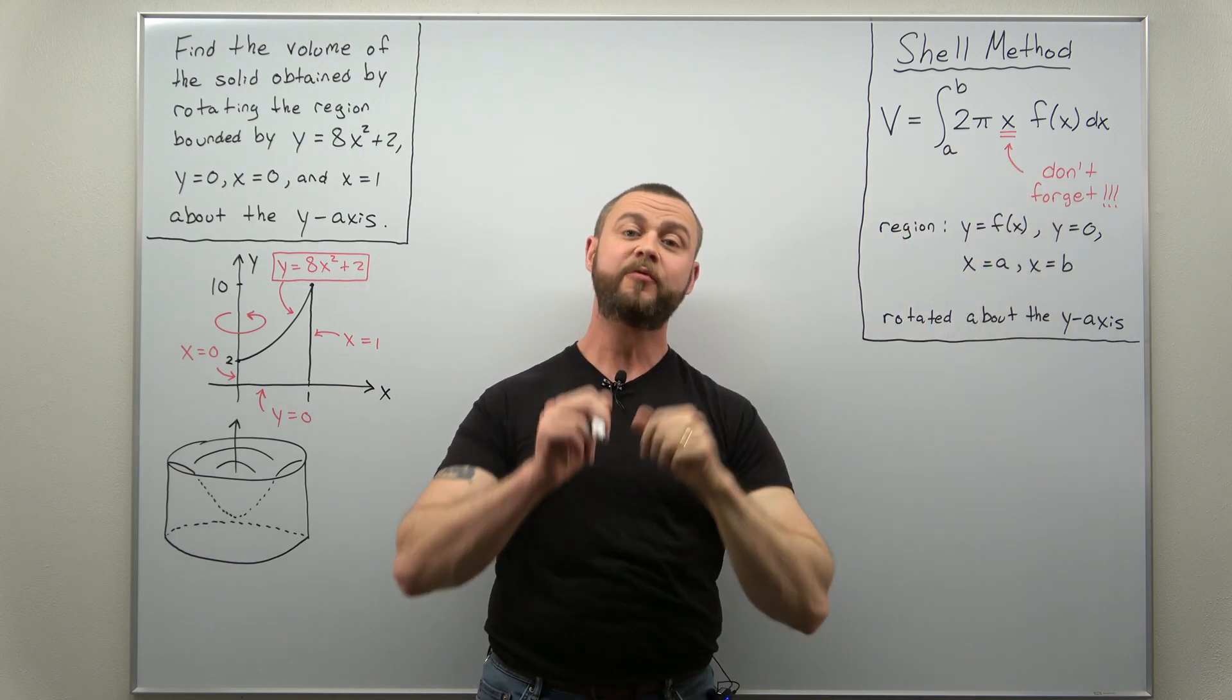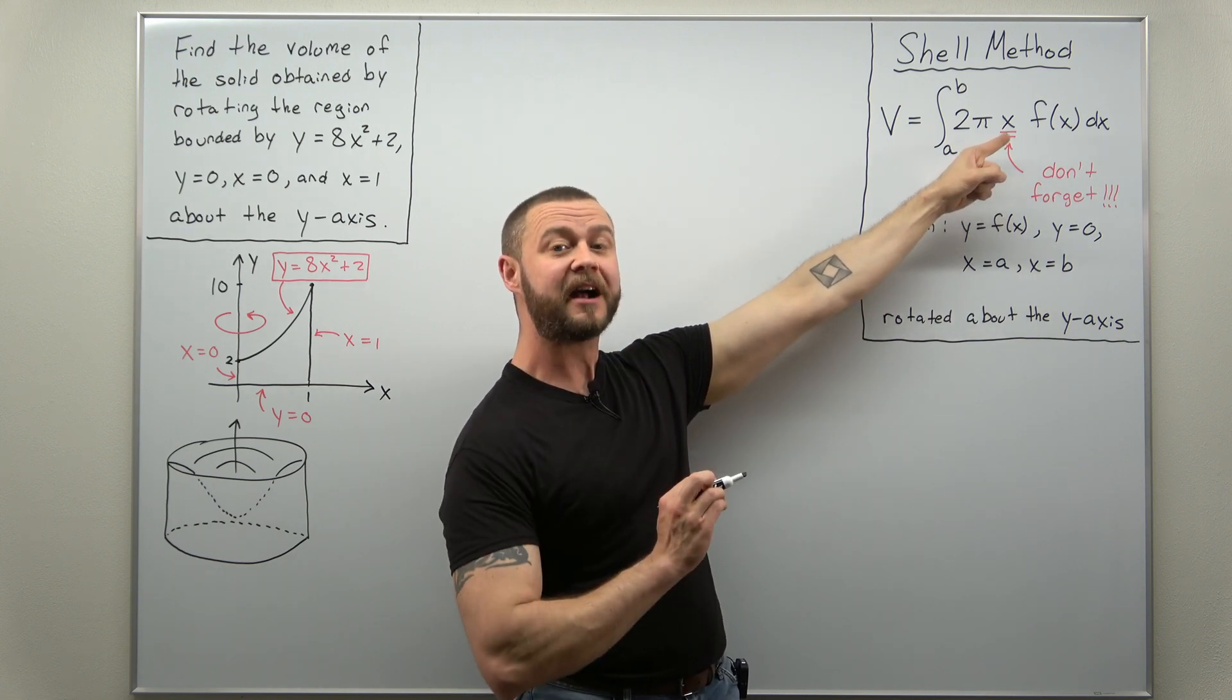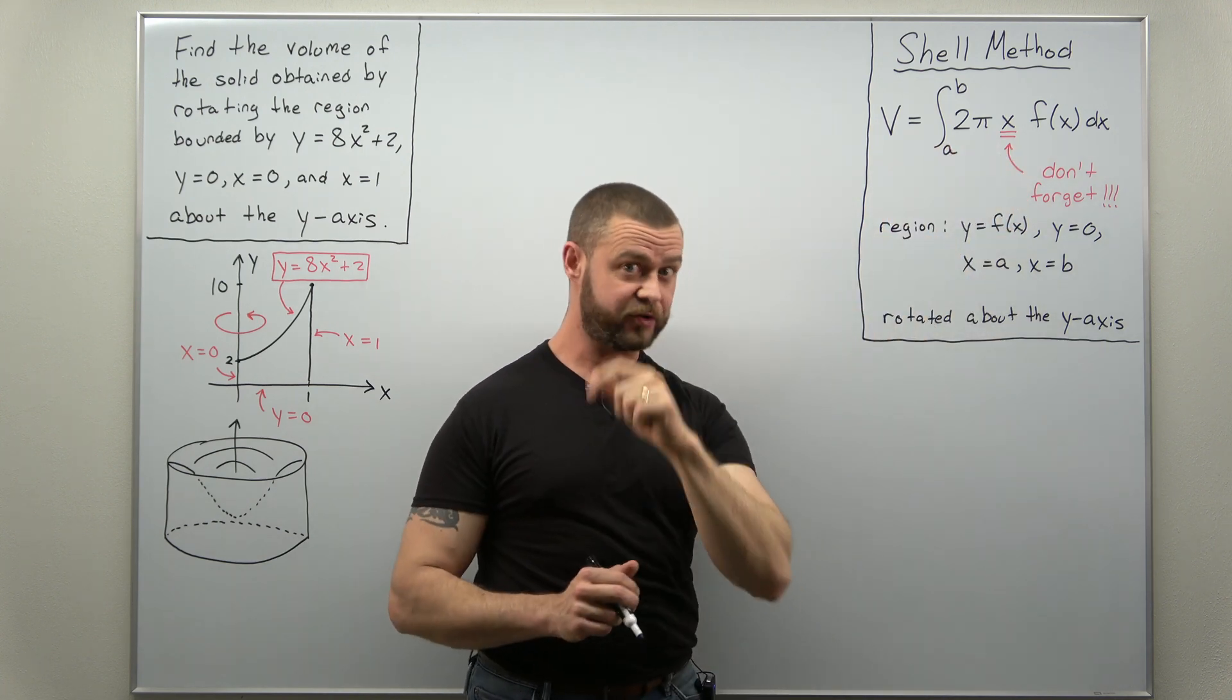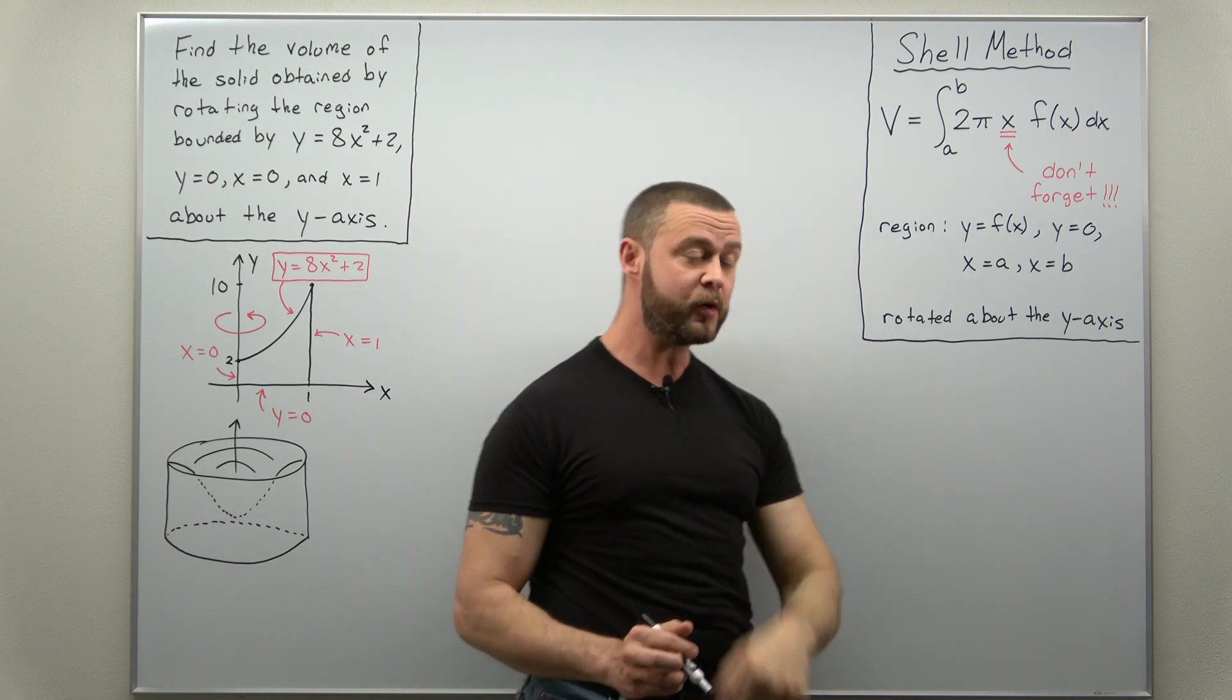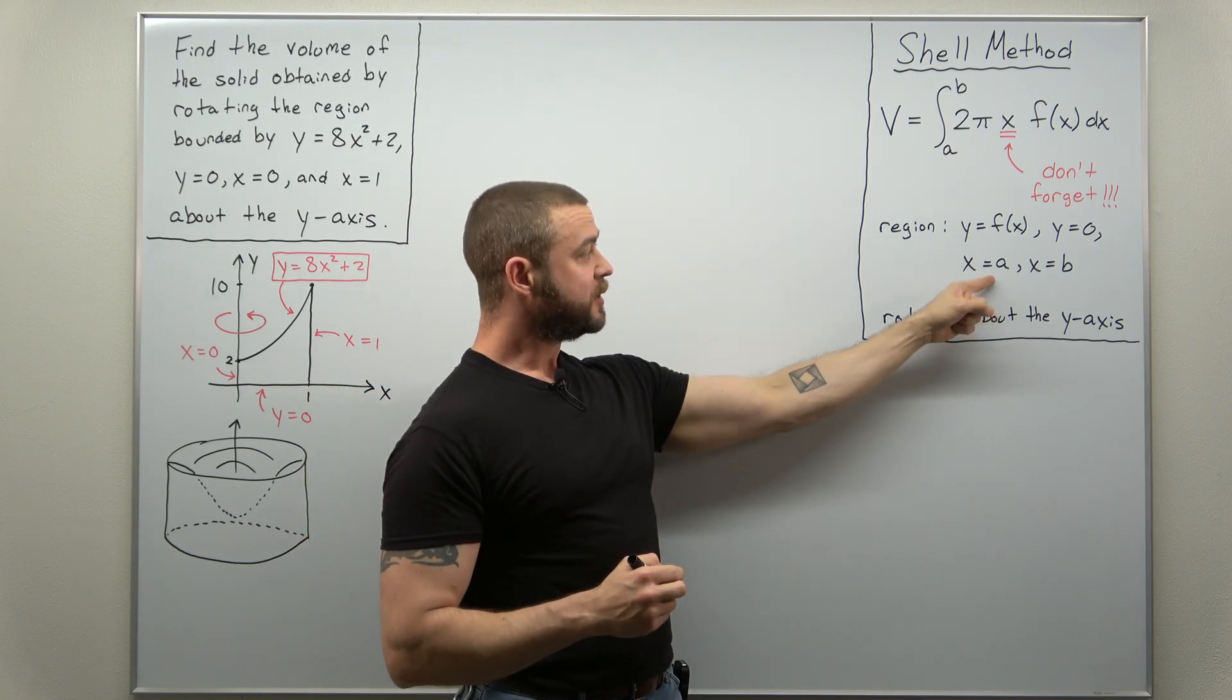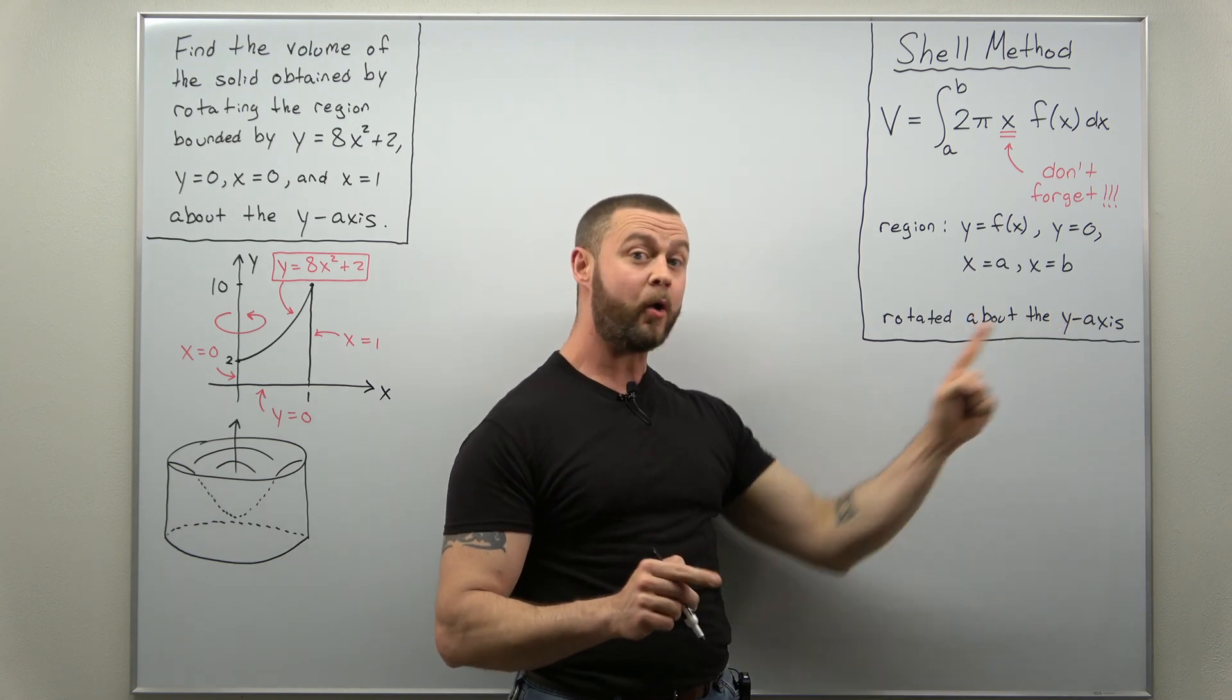Now we're not going to explain in this video where this formula comes from but rather just how to apply it. And it's worth pointing out here students often forget that factor of x and that makes all the difference in setting up your volume formula by using cylindrical shells or the shell method. Alright so all we have to do is notice we have a region basically below a curve down to the x-axis between two values x equals a and x equals b.